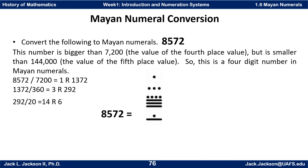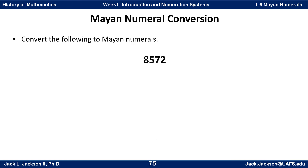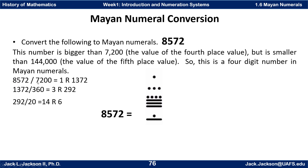Looking back at the digits from a couple of slides ago, notice that 8,572 falls between two of the place values. We won't need the highest digit, but we will need four digits. We're first looking for how many groups of 7,200 fit in: dividing 8,572 by 7,200 gives one, remainder 1,372. Dividing 1,372 by 360 gives three groups with 292 remaining. Dividing 292 by 20 gives fourteen in the next level with a remainder of six units. So that is the Mayan number.